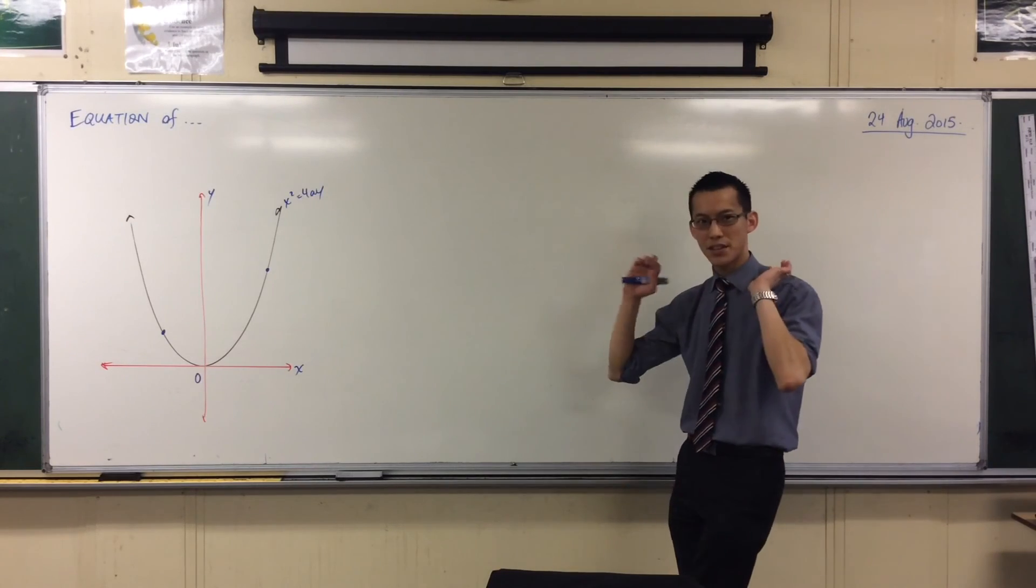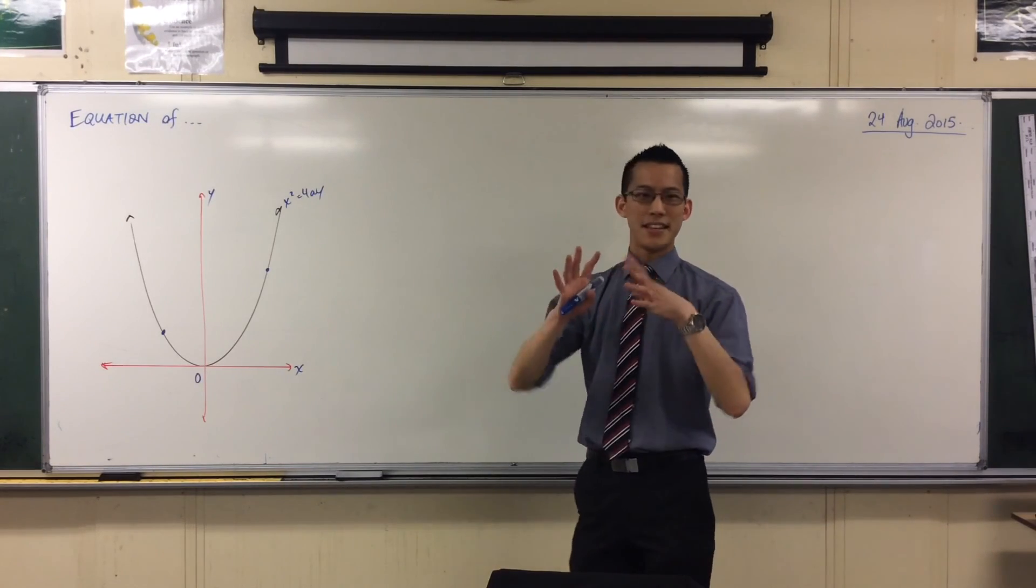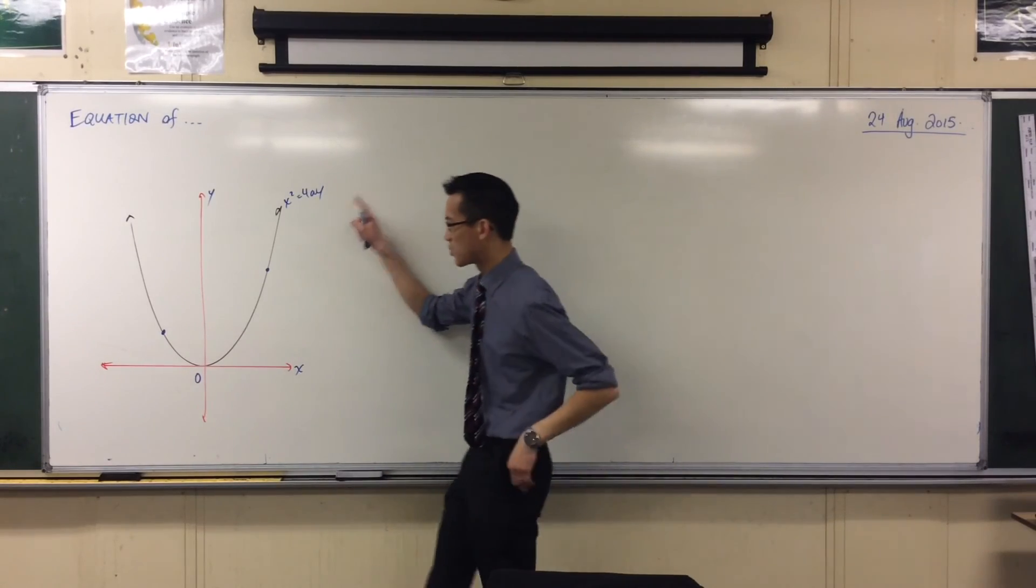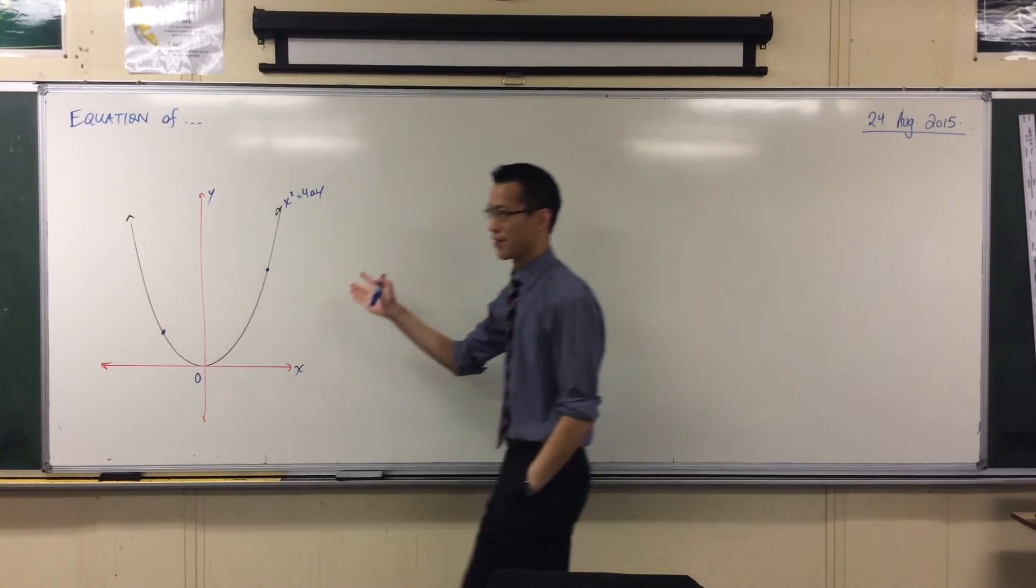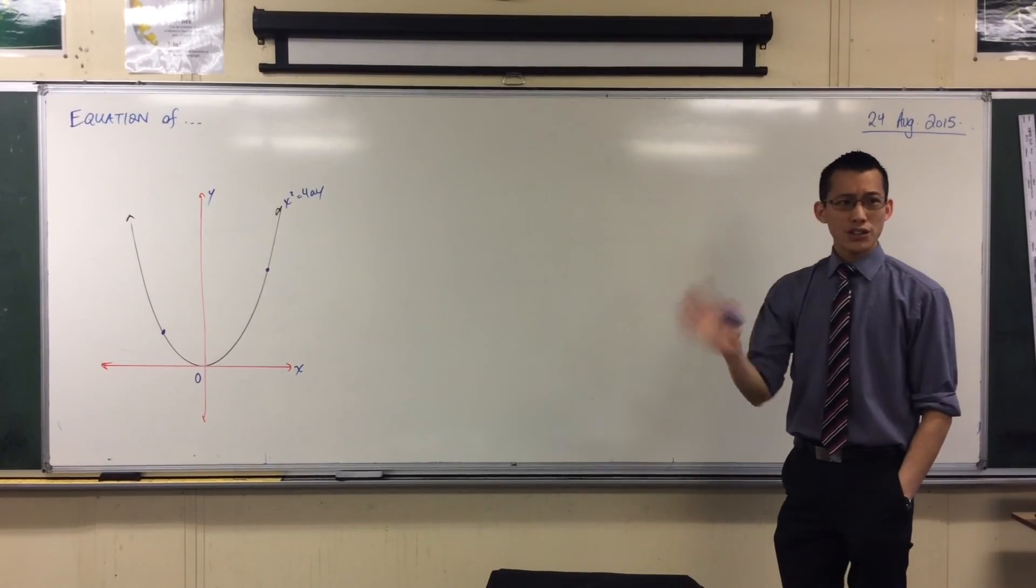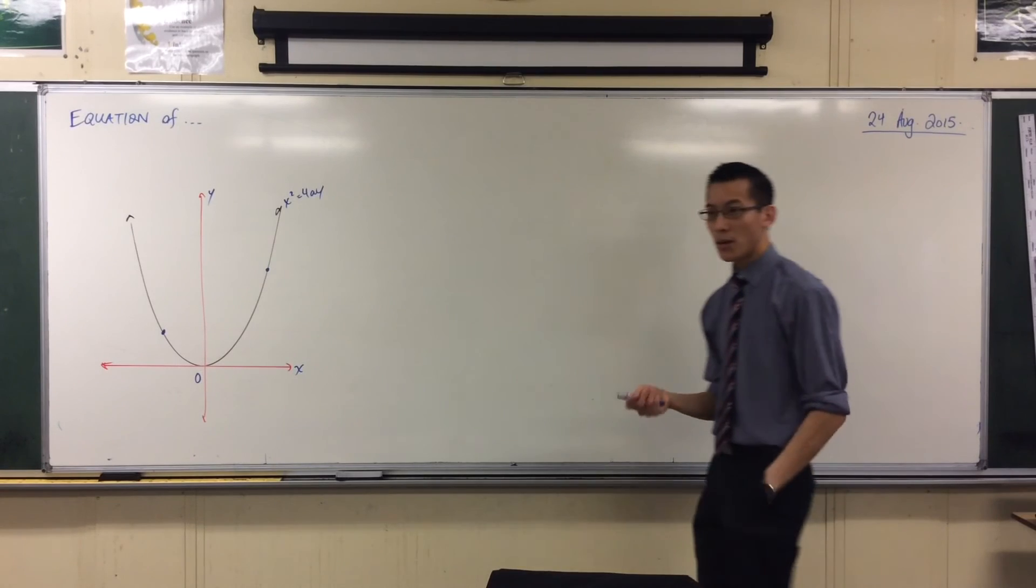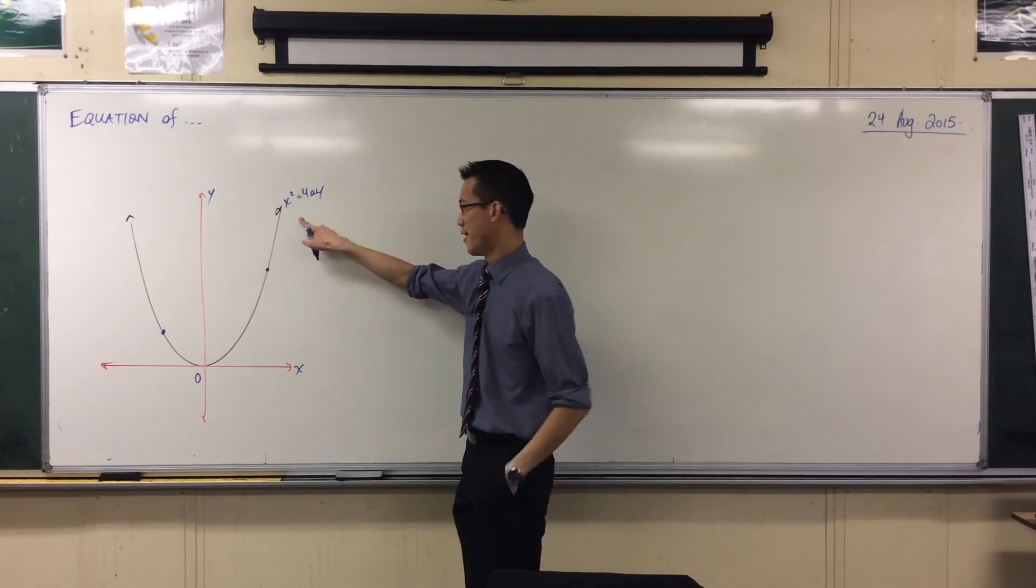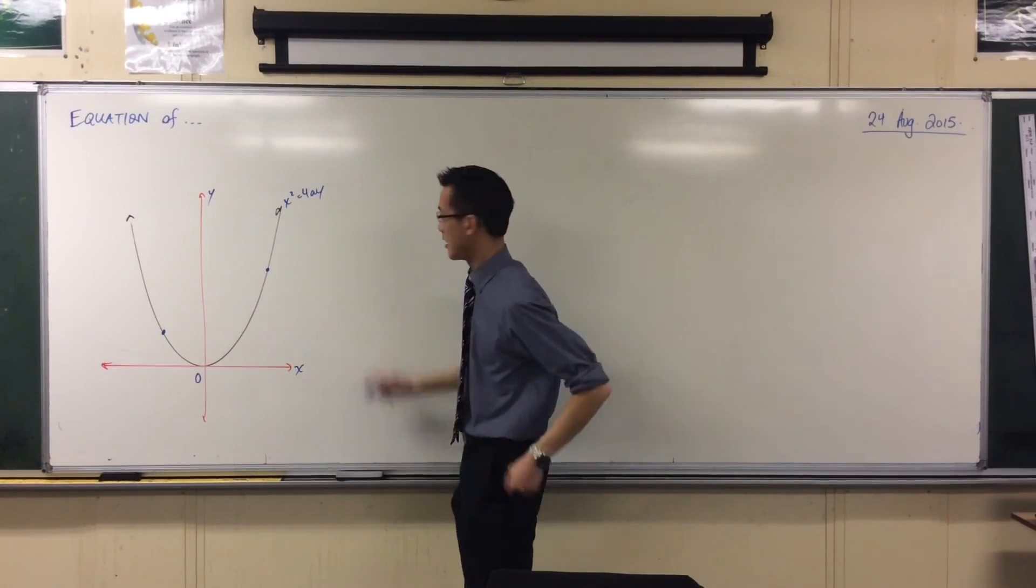Parametrics, right? We introduce this idea of a parameter, this other variable, a third variable that really defines what's going on on your curve, okay? We usually use a particular letter for the parameter which is T, okay? So if this is the Cartesian equation for our parabola here, right?